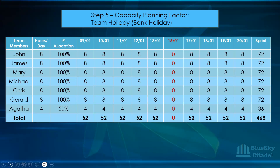For example, assume 16th of January was a bank holiday. In that column, you see zero recorded for everyone. This affects the total of 520 hours — you remove 52 hours, and the new total becomes 468. Each person's sprint hours drop from 80 to 72, and Agatha's drops from 40 to 36, because the bank holiday affects the whole team.